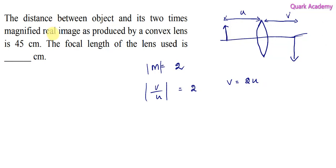And based on the question, the distance between object and the image, that is u plus v, is equal to 45 centimeters. And we know that v equals 2u. So 2u plus u will be equal to 45 centimeters. U plus 2u equals 45 centimeters. So 3u equals 45. From that, we can find the object distance, that is 15 centimeters.